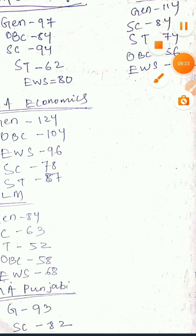Next, MA Journalism and Mass Communication: General mark is 120, OBC is 94, SC is 78, ST is 72, EWS is 87. Next, LLM: General mark is 97.